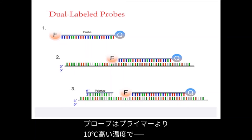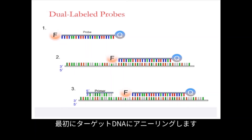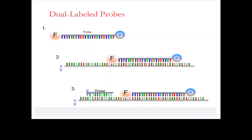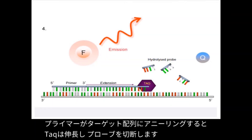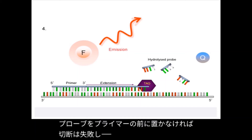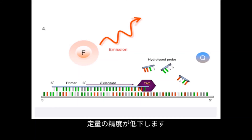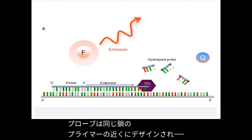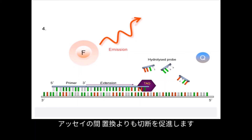The probes have a 10 degrees higher melting temperature than the primer, so they will anneal first to the target. Therefore, Taq will not bind until the primer anneals. The moment the primer anneals to the target, the Taq polymerase extends and cleaves the probe. If the probe is not placed before the primer, it will not be cleaved successfully, hence it reduces accuracy of quantification. The probe and primer require an optimal gap of five bases and a two-step PCR reaction. Fluorescence occurs when the fluorophore is cleaved in the extension phase. Once cleaved, the released fluorophore will continue to fluoresce. The probe is designed to be near the primer on the sense strand, which encourages cleavage rather than displacement during the assay.